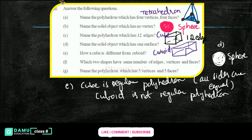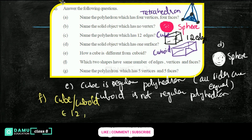Next one: which two shapes have the same number of edges, vertices, and faces? Obviously it is cube and cuboid. Both will have 12 edges, 8 vertices, and 6 faces.